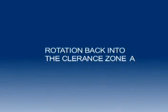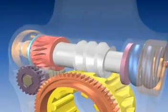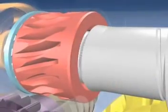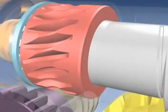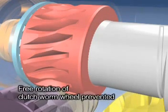Rotation back into the clearance zone A: During brake release, the force is reduced and the load of the heavy compression spring moves the worm shaft to engage the clutch, preventing the free rotation of clutch worm wheel.